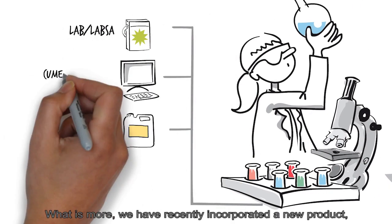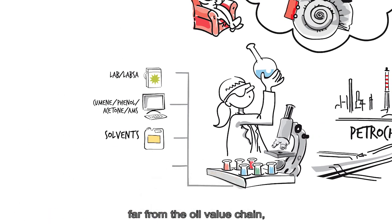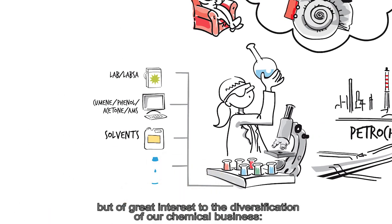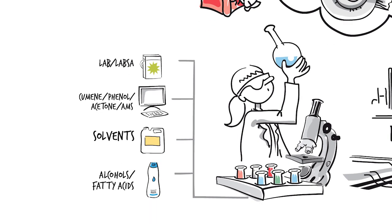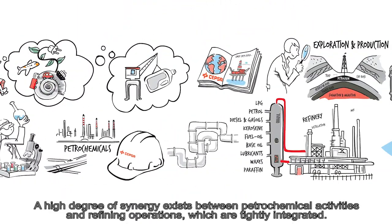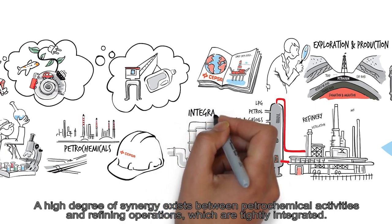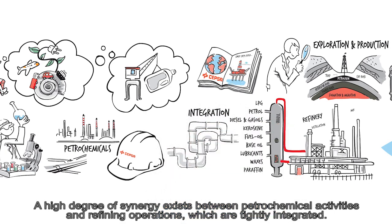What is more, we have recently incorporated a new product. Far from the oil value chain, but of great interest to the diversification of our chemical business, the manufacturing of products derived from vegetable raw materials. A high degree of synergy exists between petrochemical activities and refining operations, which are tightly integrated.